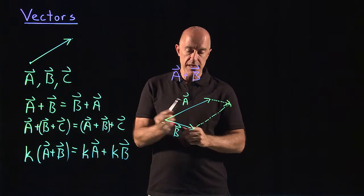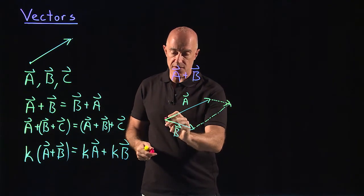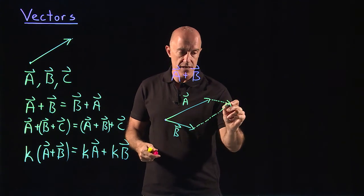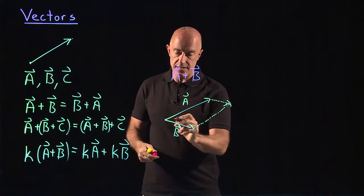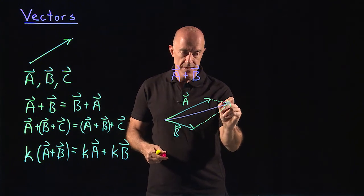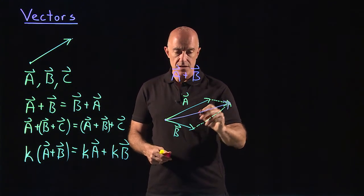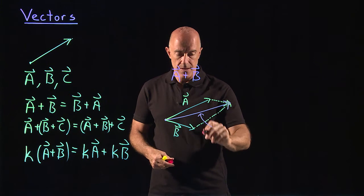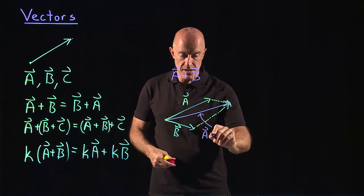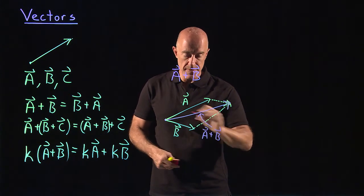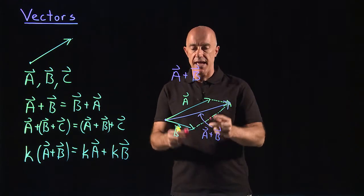A plus b is the vector that goes from the tail here to the connecting heads here. This vector. So this vector here is a plus b.